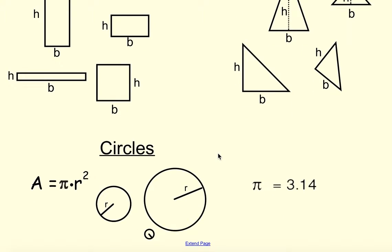Lastly, circles are everybody's favorite. We have area equals pi r squared, which is pi times r times r. r stands for the radius, which is halfway across. And pi is represented by the number 3.14.